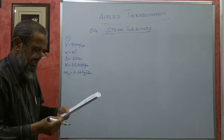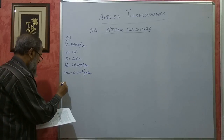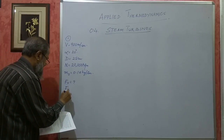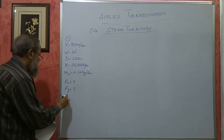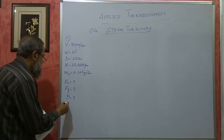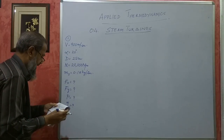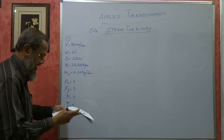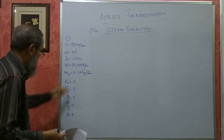Draw the velocity diagram and calculate the following: tangential force on the blade Fx, axial force on the blades Fy, power developed by the turbine P, blade efficiency, and inlet angle of the blade theta. These are the quantities to be found out.